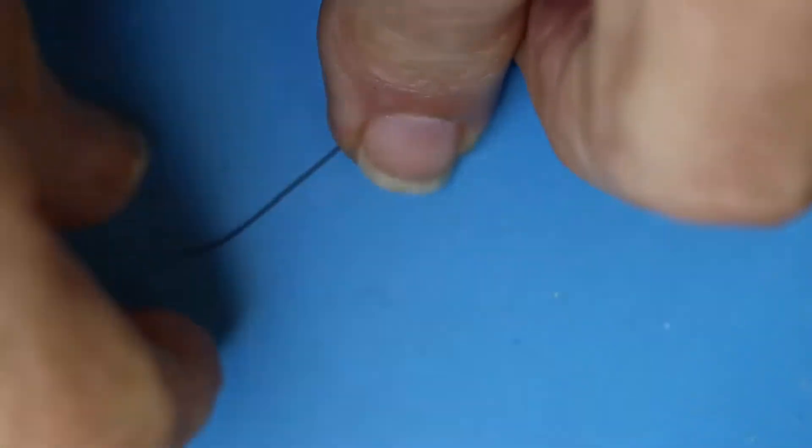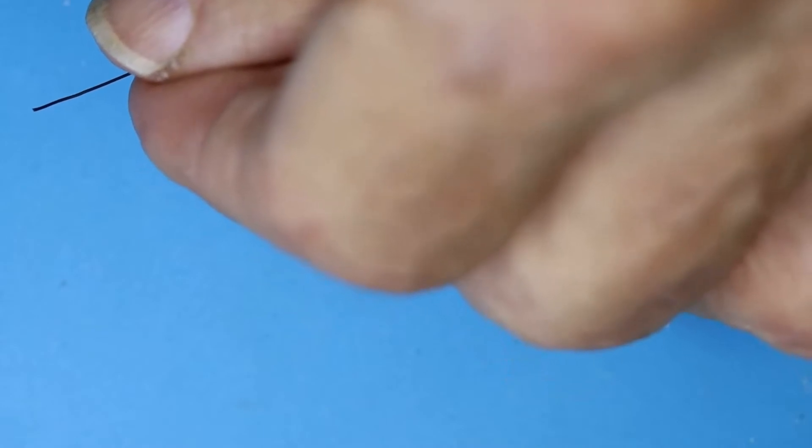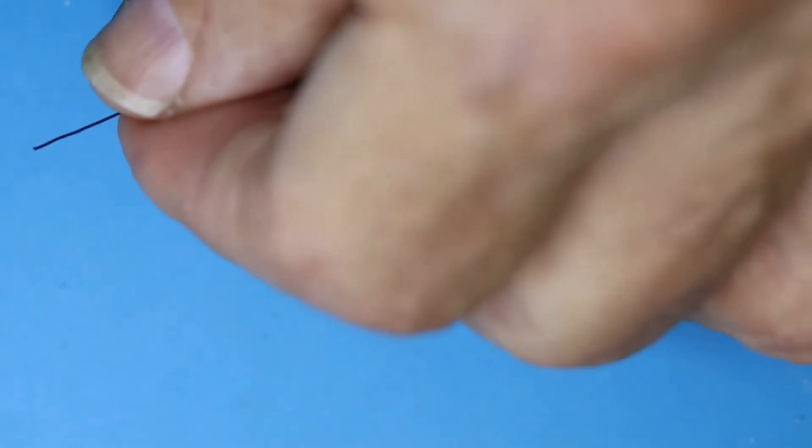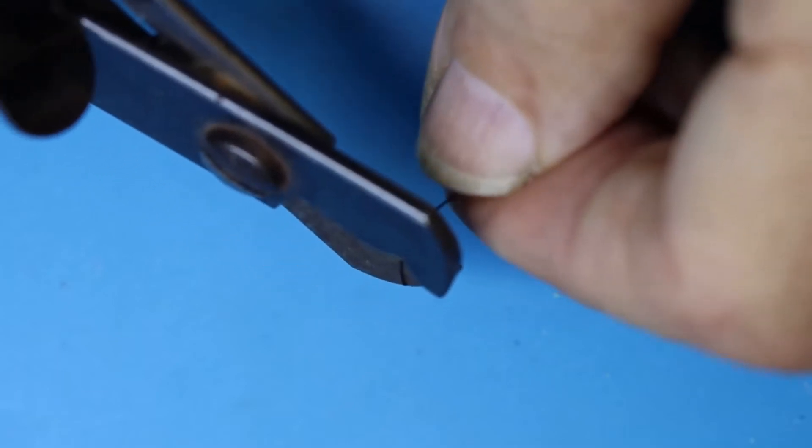Hi, what I want to show you today is how I solder magnet wire to stranded wire. This is a piece of stranded wire. The first thing I'm going to do is strip it.